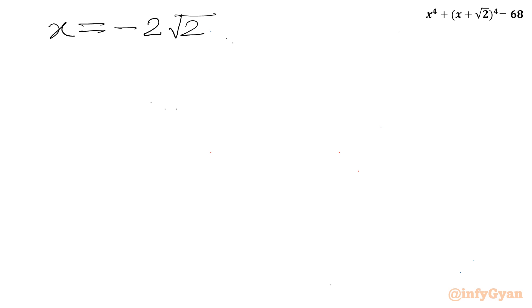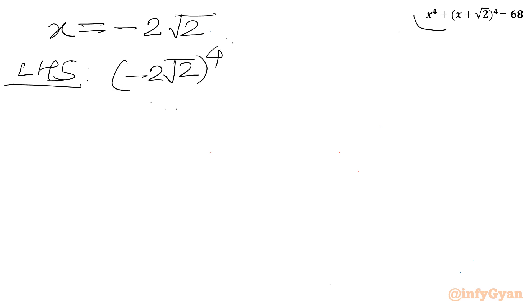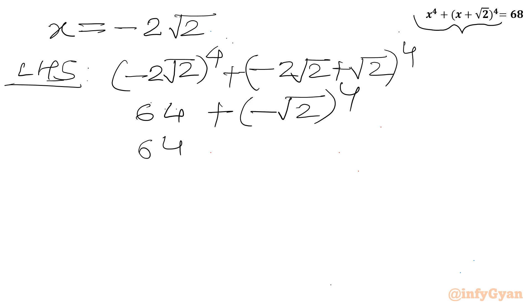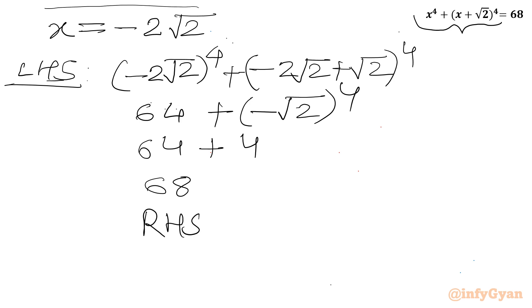Now checking x = -2√2: (-2√2)⁴ + (-2√2 + √2)⁴ = 64 + (-√2)⁴ = 64 + (√2)⁴ = 64 + 4 = 68. This also equals RHS, so x = -2√2 is also a verified solution.